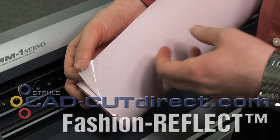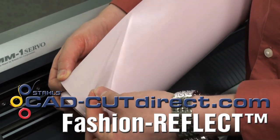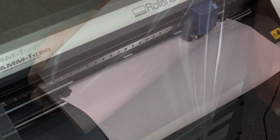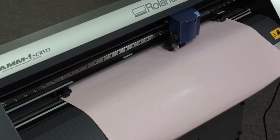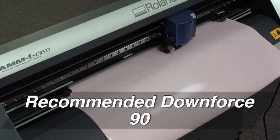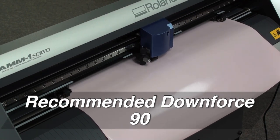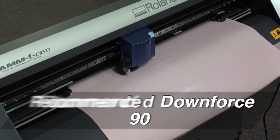The second product that we'll cut is Fashion Reflect. Before cutting, remove the clear liner. Before cutting Fashion Reflect, be sure to set your blade depth and cutting down force accordingly. On a scale of 0 to 250 grams, you'll need 90 grams of down force.